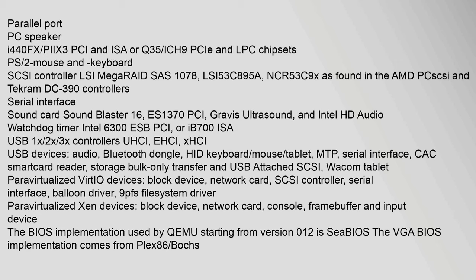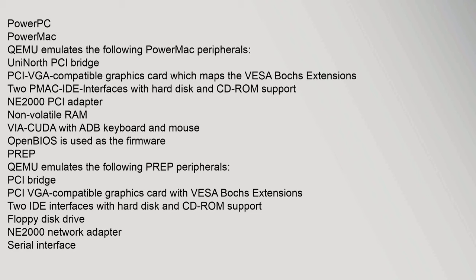Para-virtualized VirtIO devices include: block device, network card, SCSI controller, serial interface, balloon driver, and 9PFS file system driver. Para-virtualized Xen devices include: block device, network card, console, frame buffer, and input device. The BIOS implementation used by QEMU starting from version 0.12 is cBIOS; the VGA BIOS implementation comes from Plex86/Bochs.